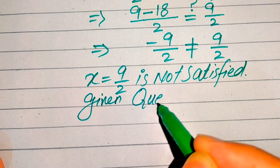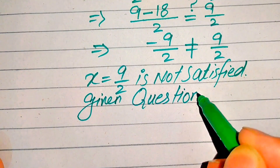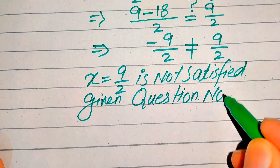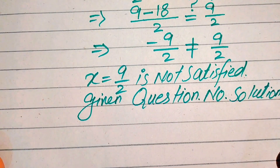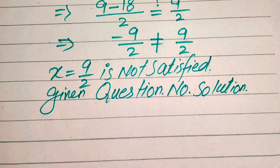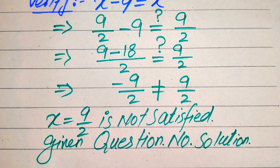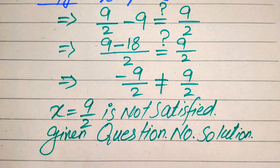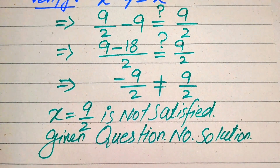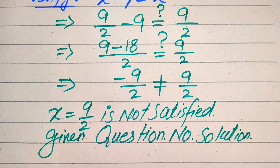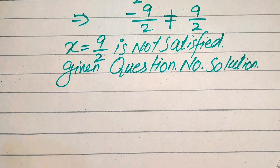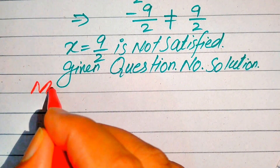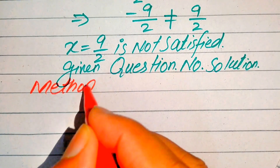This means that our given question has no solution, because this value is not satisfied. So this is our final answer of this question. I hope you like this method. Now we again solve this problem for the second method.